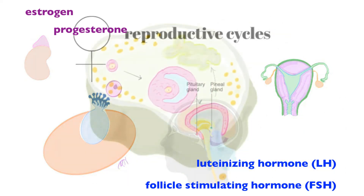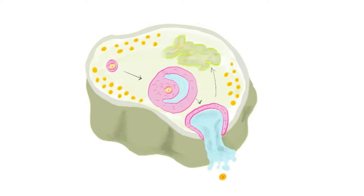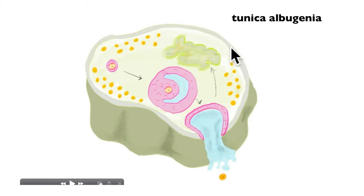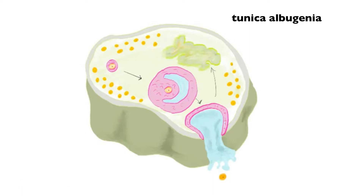Here we see an ovary. Most females have two ovaries that are physically connected to the uterus via the round ligaments, broad ligaments, and held in place by the suspensory ligaments. The capsule of the ovary is known as the tunica albuginea, and like any solid organ, there is a cortex and a medulla — the medulla being the interior and the cortex the periphery.